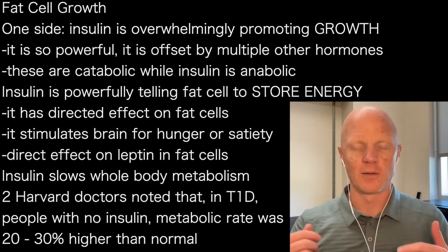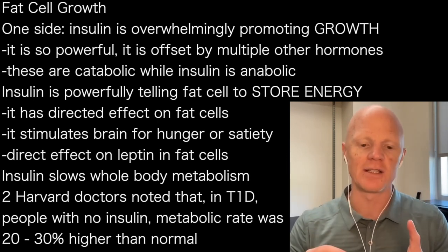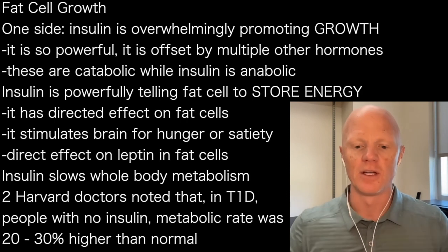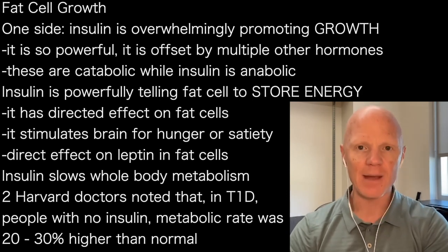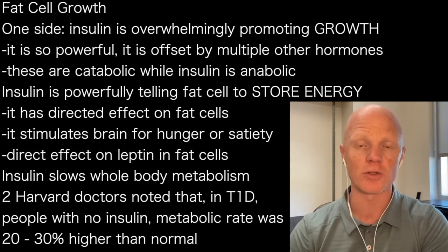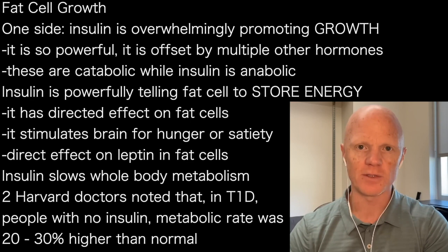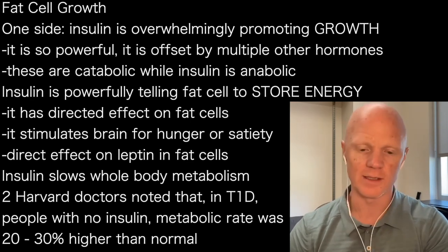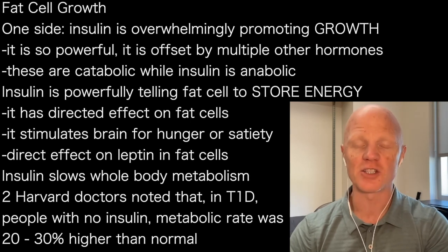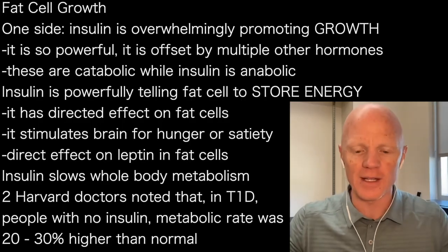Indeed, over 100 years ago, two famous Harvard scientists — Elliot P. Joslin and Francis G. Benedict — came together to try to understand metabolism in what they called severe diabetes, which we would describe as uncontrolled type 1 diabetes. They noted that in individuals who have no insulin, their metabolic rate was 20 to 30 percent higher than it should be. There was something uncontrolled — this fire just raging through their body.